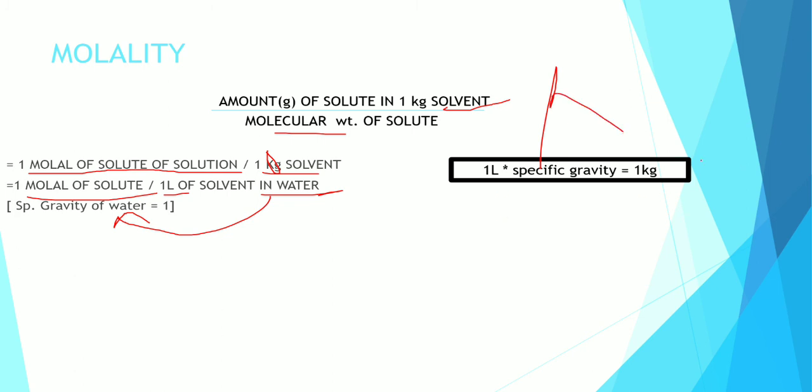How to convert one liter to one kg? You multiply with specific gravity. Same example: 106 is the molecular weight, and 106 grams of Na2CO3 dissolved in one liter or one kg or 1000 ml solvent.